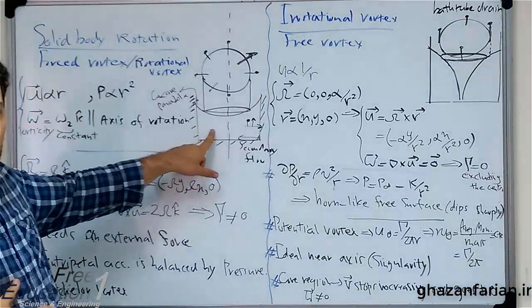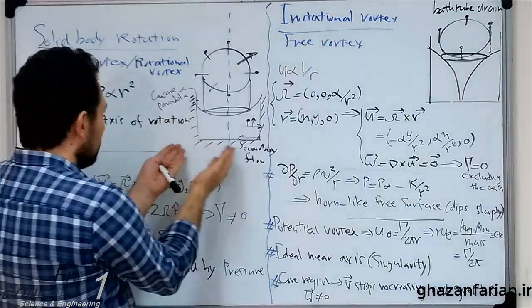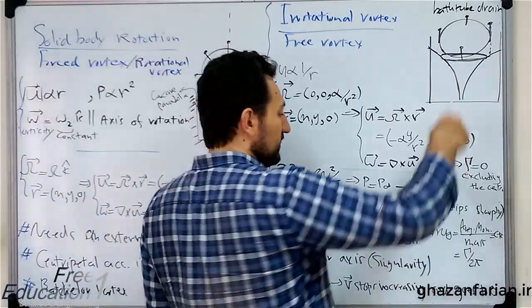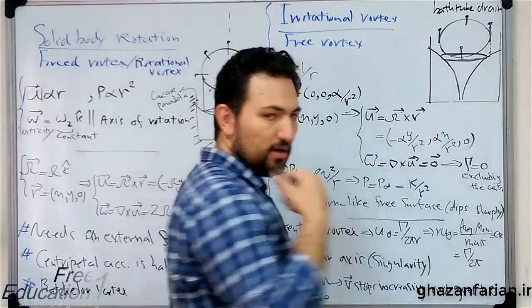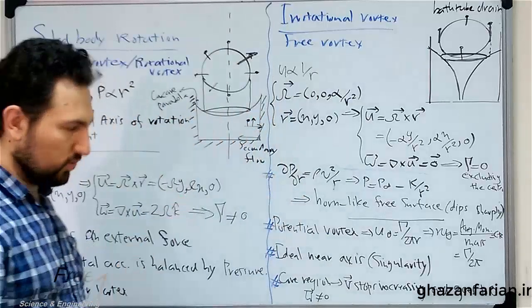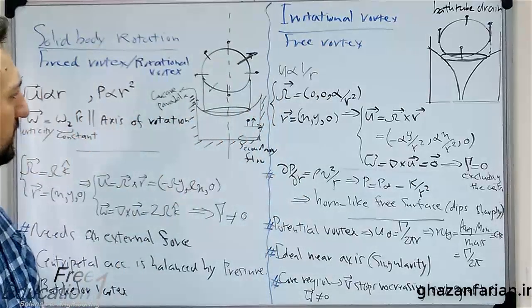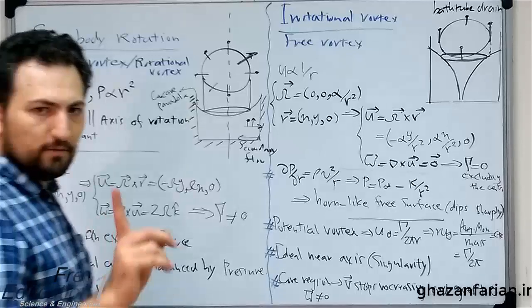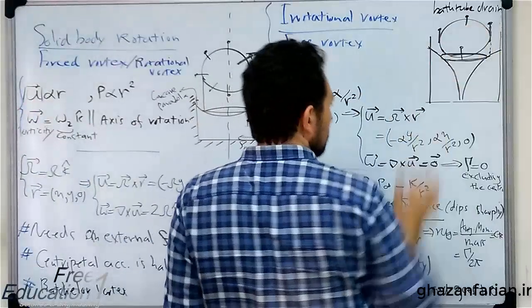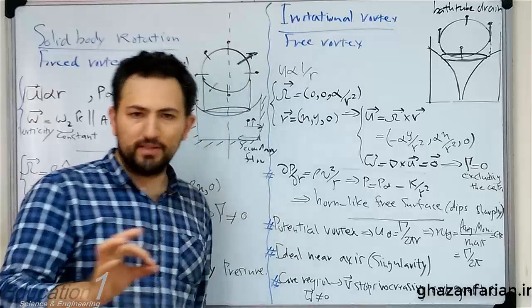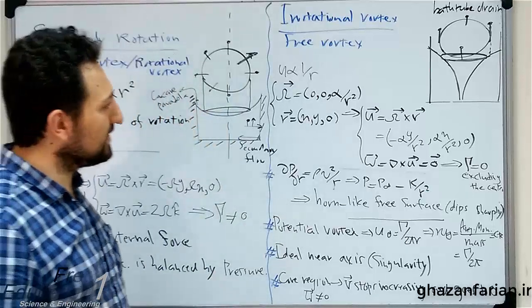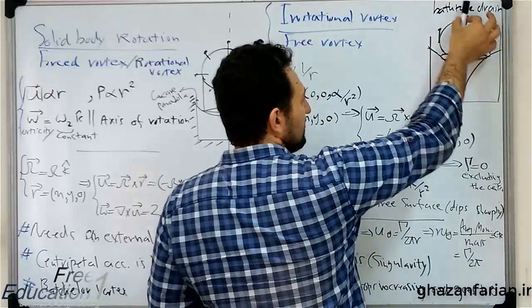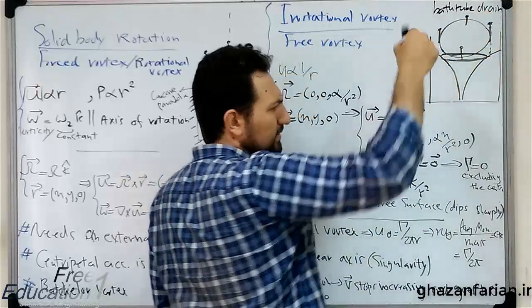The free surface is a concave profile, but here the free surface dips sharply near the center of rotation or the axis of rotation. If you put a visualizer on the surface of this rotating vortex, you will see that the direction of the visualizer is vertical or in the same direction.